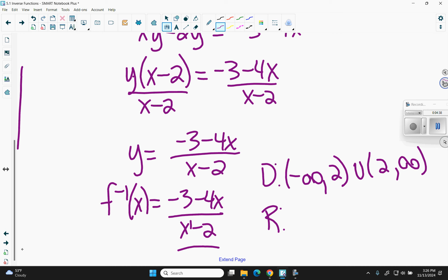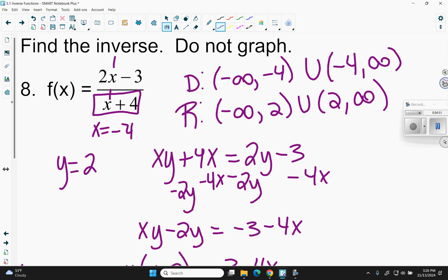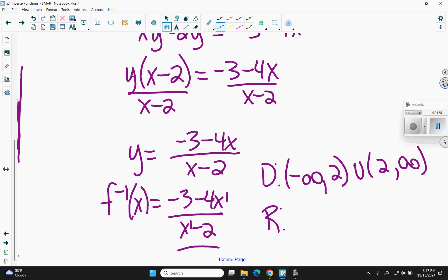And my range should be what the domain was before. And look at my leading terms. Be careful because I have it written separate. But it's negative 4 over 1. So my range is negative infinity to negative 4, union negative 4 to infinity.